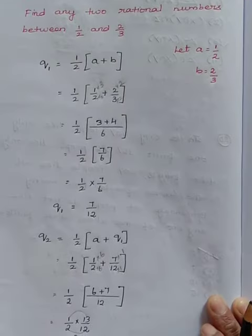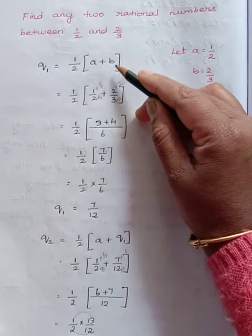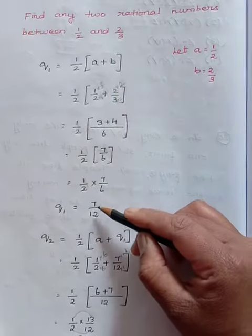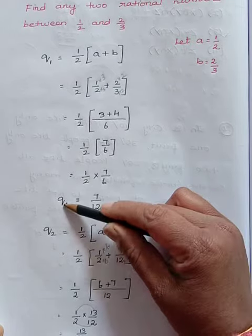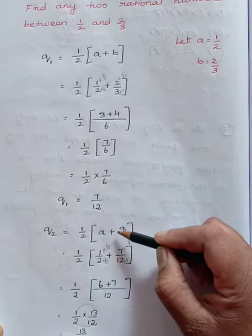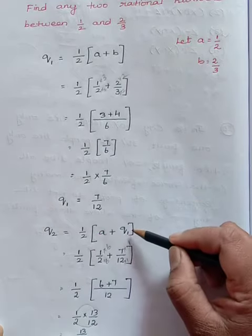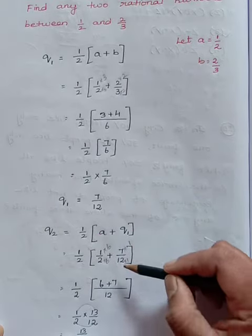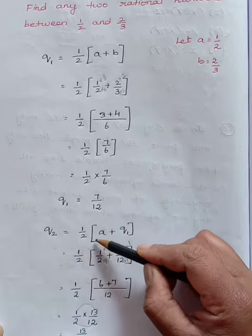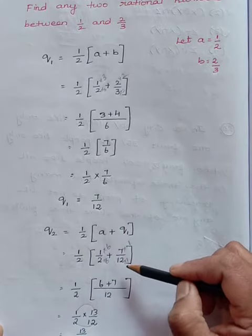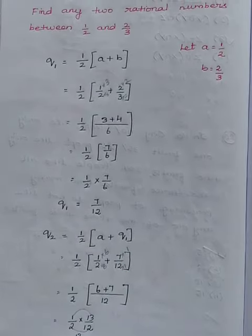To find the first rational number, the formula is half into A plus B. So we got the first rational number Q1. To find the second rational number, half into A plus first rational number Q1. If you want to find Q3, half into A plus Q2 gives you the third rational number.